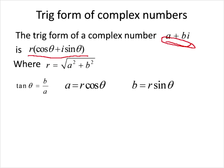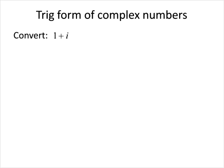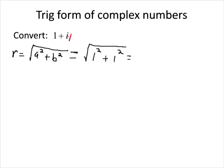Let me show you just one little example. Let's say I want to take the complex number 1 plus i and change it into trig form. The very first thing I need to do is find out what R is. R is going to be the square root of A squared plus B squared. B is the number multiplied times i — in this case there isn't one written, so we think of it as times 1. So B is 1 and A is 1, giving us the square root of 1 squared plus 1 squared, which is the square root of 2.